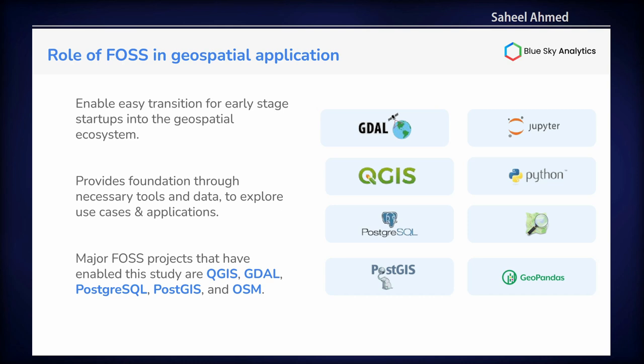So what is the role of FOSS in geospatial applications? For starters, it provides researchers and startups a platform and a head start who are transitioning into the geospatial ecosystem. It provides open source data and tools so that we can focus more on the use case and application rather than building something from scratch. Some of the FOSS projects that enabled this study include GDAL, QGIS, Postgres, and PostGIS.